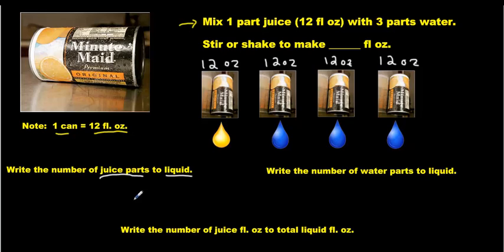How many parts juice do we have? How many juice parts do you see? We see 1. 1 part. So we'll write 1 part juice to liquid. How much liquid is there?